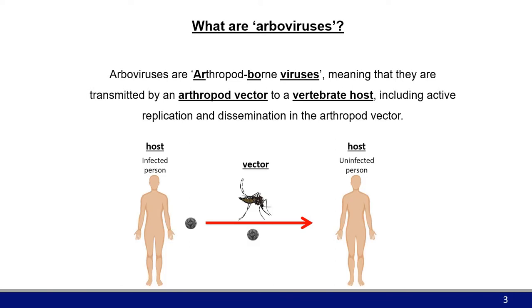Essentially, the vector carries the virus from one host to another. An infected host passes virus to the vector, which then directs transmission to an uninfected host, continuing the cycle. The only other routes for arboviruses to be transmitted would be, for example, a contaminated blood transfusion. There are a few exceptions, such as Zika virus, which can be transmitted sexually, but we'll talk about that on a later slide.